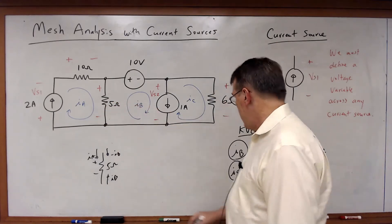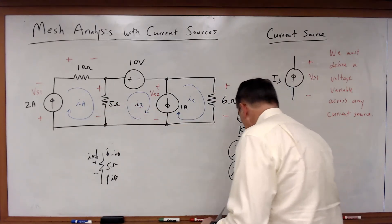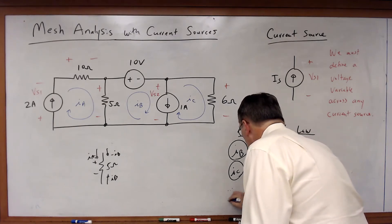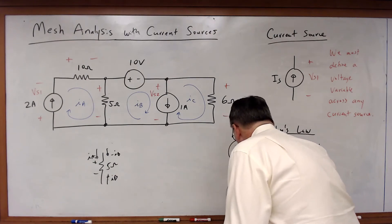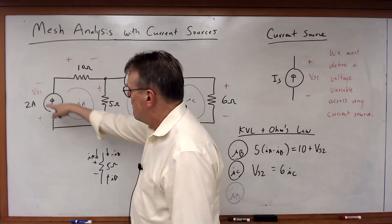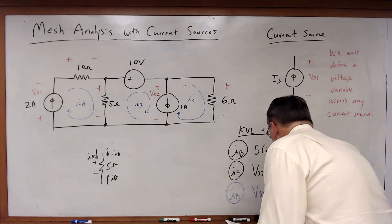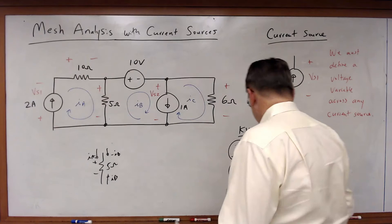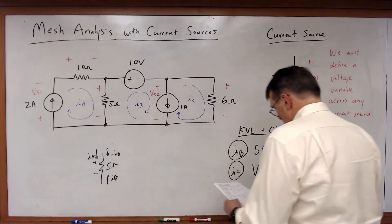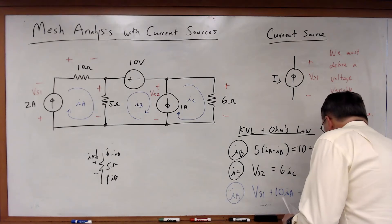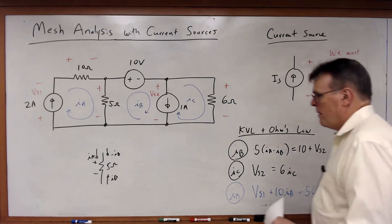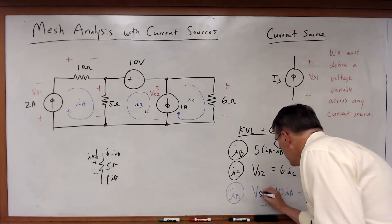Now let's consider the Ia mesh — I'm going to write that one last in a different color, and as you'll see there's a reason for that. Going around clockwise: VS1 is a drop, 10Ia is a drop, and 5(Ia − Ib) is a drop.